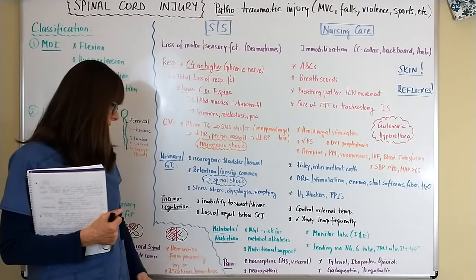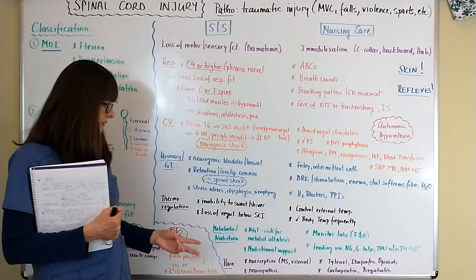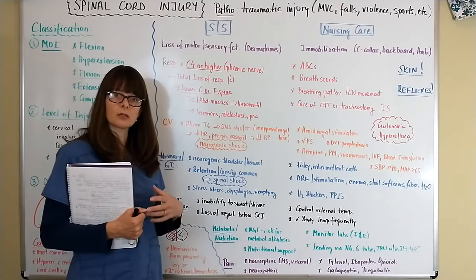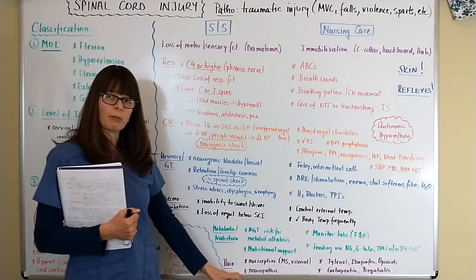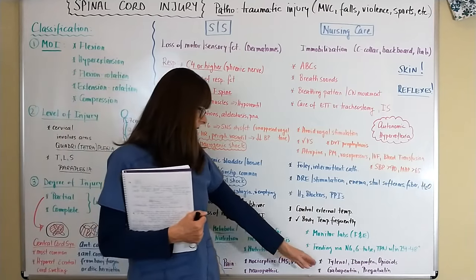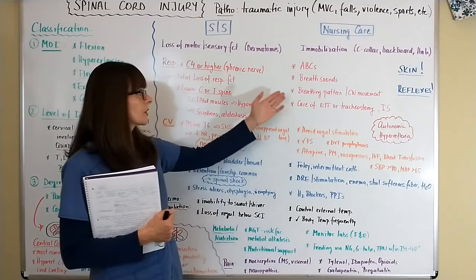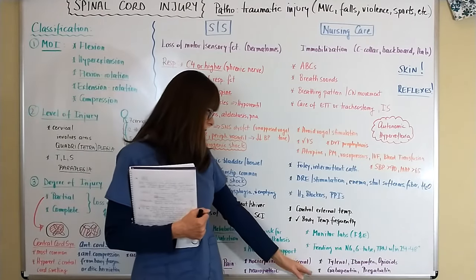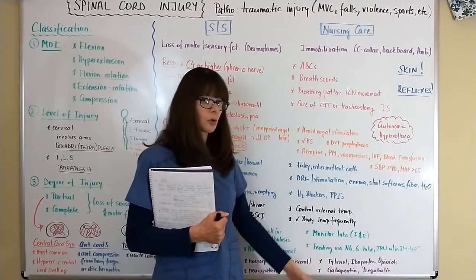Pain is a significant issue with two types. Nociceptive pain — musculoskeletal or visceral — is treated with Tylenol, ibuprofen, or opioids, though opioids must be used judiciously given concerns with breathing and cardiovascular function. Neuropathic pain from nerve injury is most commonly treated with gabapentin (Neurontin) or pregabalin (Lyrica).